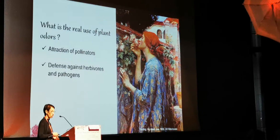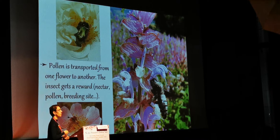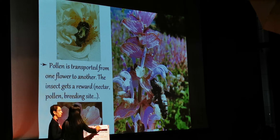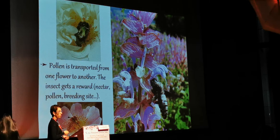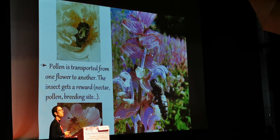Attraction of pollinators is something really important for plants. Pollen has to be transported from one flower to another so that the plant reproduces, and this is usually done by using scents. Often, but not always, the insect gets a reward — it can be nectar, it can be pollen. Here you have some pictures: on the right this is a sage pollinated by insects, and you have two roses which are generally pollinated by bees or bumblebees.